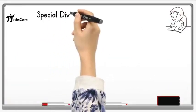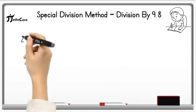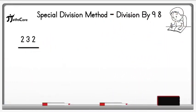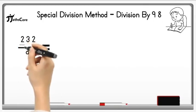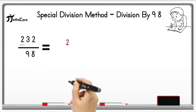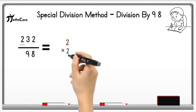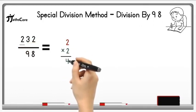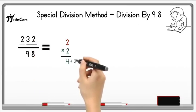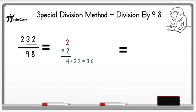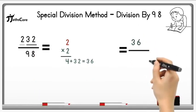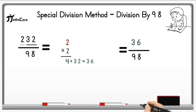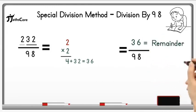Let's solve some example on division by 98. Example is 232 divided by 98. First of all write down 100 place digit 2 here and after that multiply it with 2 because if we subtract 98 from 100 then we will get 2. So 2 multiplied by 2 is equal to 4 and add this 32 in this form so 4 plus 32 is equal to 36. Now take this 36 in the next step and divide it by 98 but 36 is less than 98 so we cannot divide it. So this 36 is a remainder and 2 is a quotient.